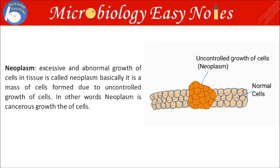Neoplasm: excessive and abnormal growth of cells in tissue is called neoplasm. Basically, it is a mass of cells formed due to uncontrolled growth. In other words, neoplasm is a cancerous growth of cells.